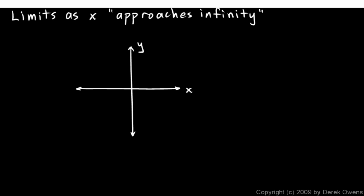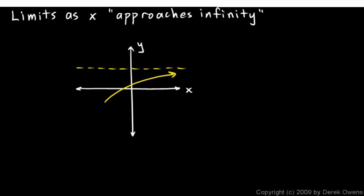Now we'll talk about the limit of a function as x approaches infinity. What we often end up with in this discussion is a horizontal asymptote. So suppose as x gets really big — that's what we mean by x approaching infinity — the function approaches some particular y value. x doesn't really approach infinity; x doesn't get close to infinity. What we mean is as x gets really large, the function approaches a particular y value. And that's a horizontal asymptote.